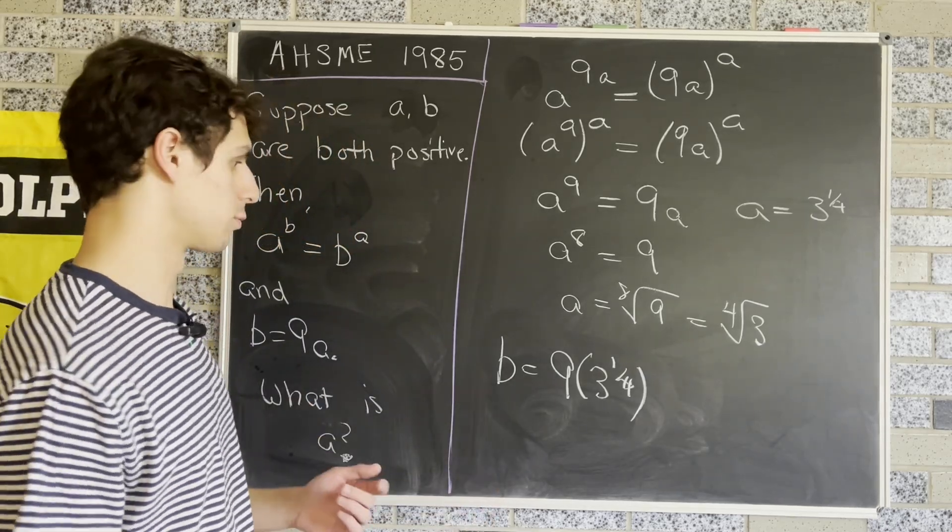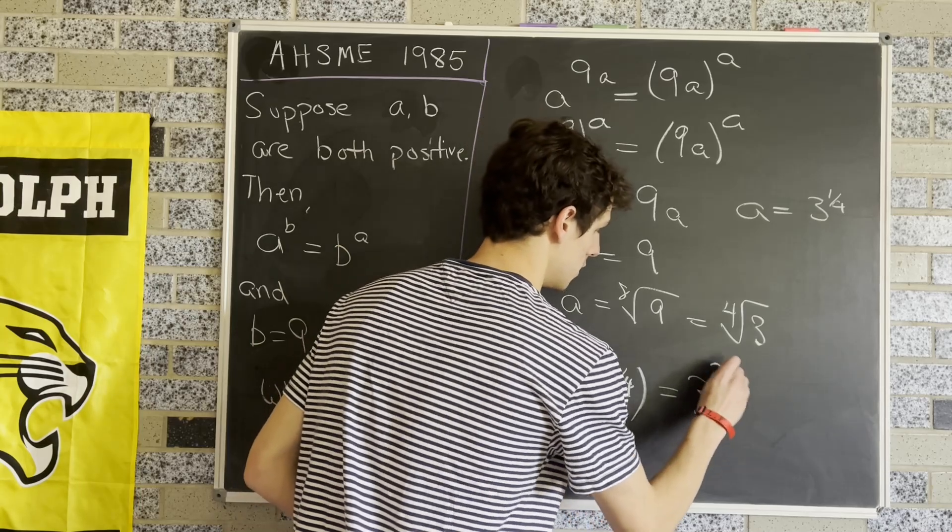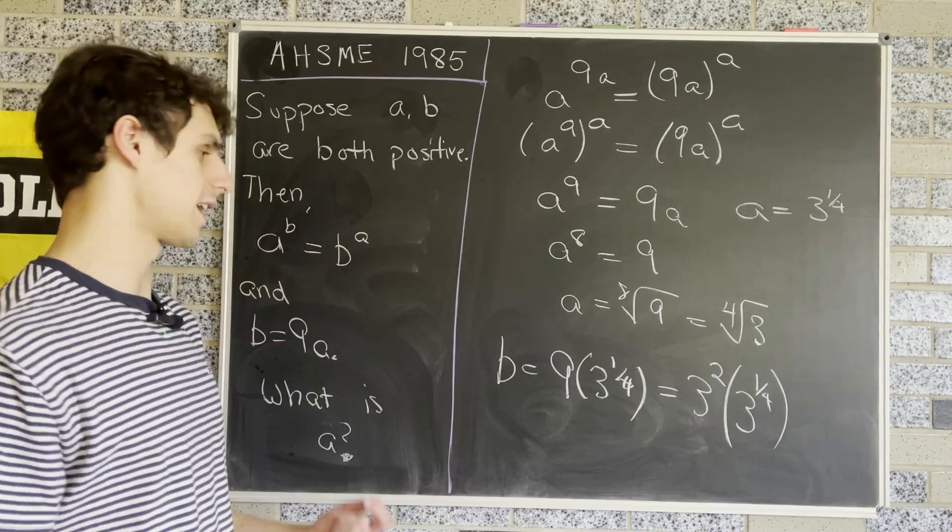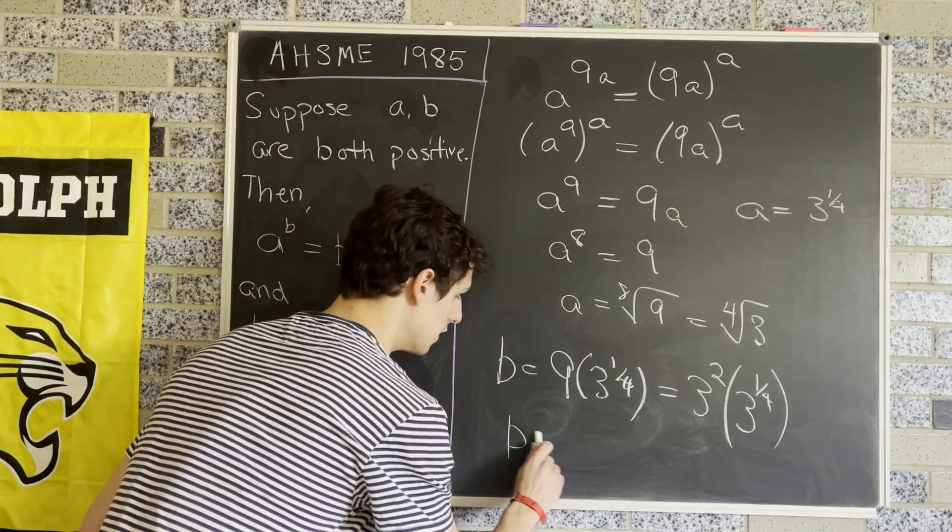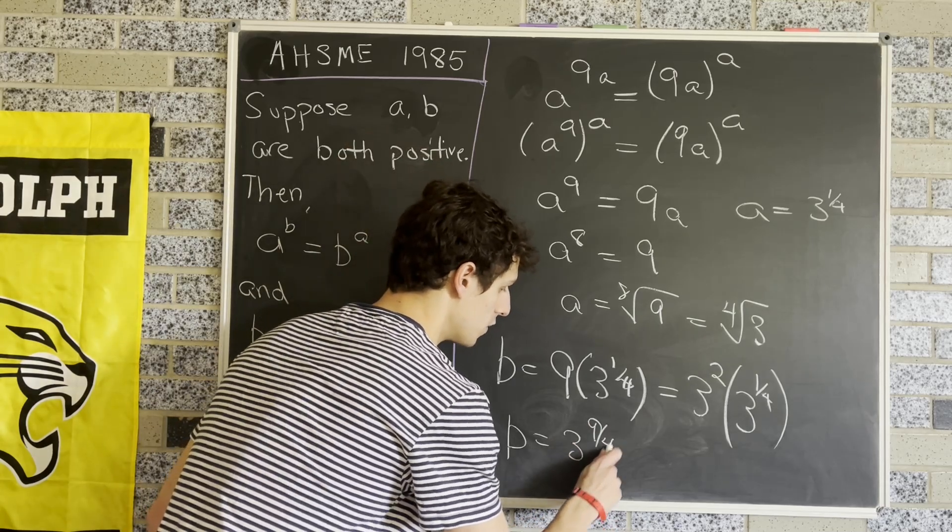But we know that 9 = 3^2. So we can simplify this as 3^2 × 3^(1/4). Using exponent rules, we just add the exponents together, giving us B = 3^(9/4).